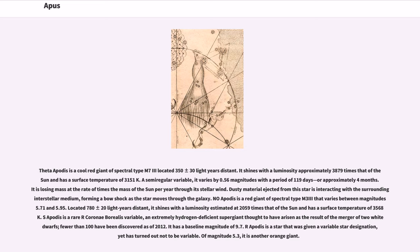Nu Apodis is a red giant of spectral type M3 III that varies between magnitudes 5.71 and 5.95. Located 780 plus or minus 20 light-years distant, it shines with a luminosity estimated at 2059 times that of the Sun and has a surface temperature of 3568 K.